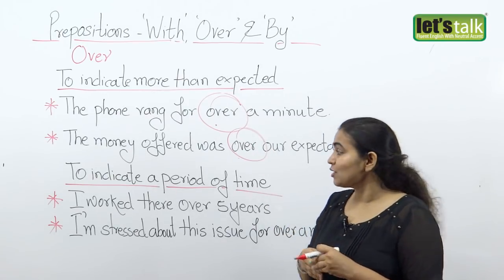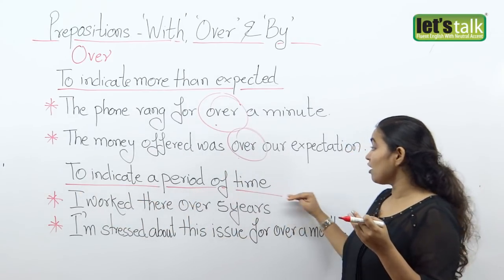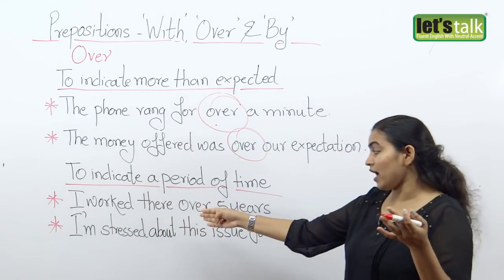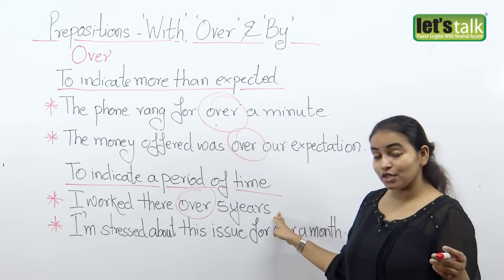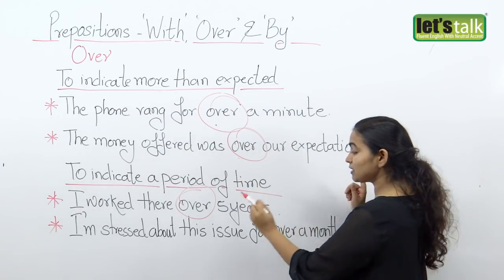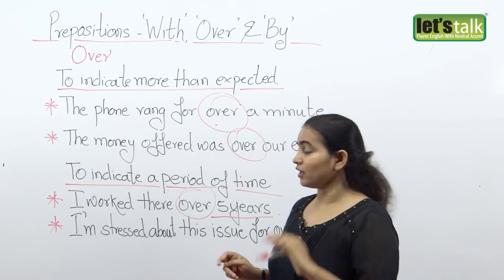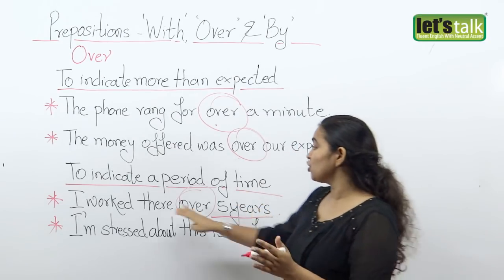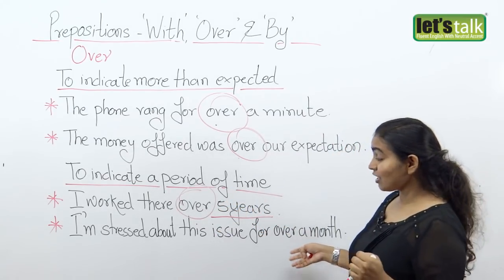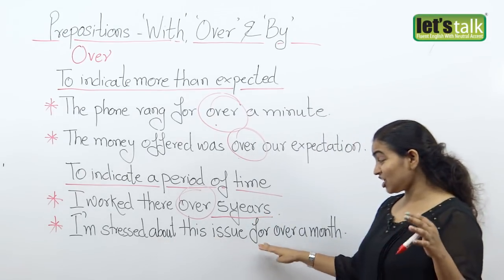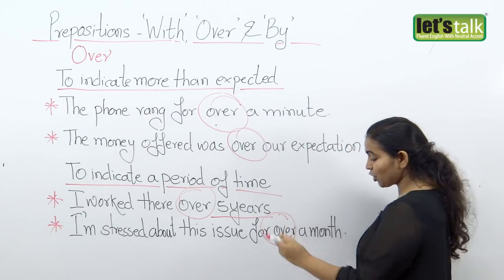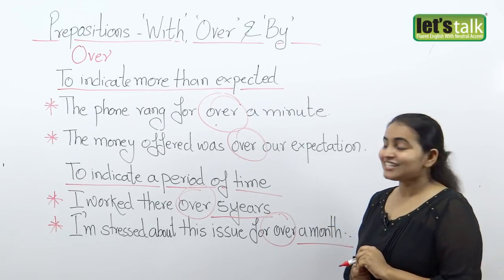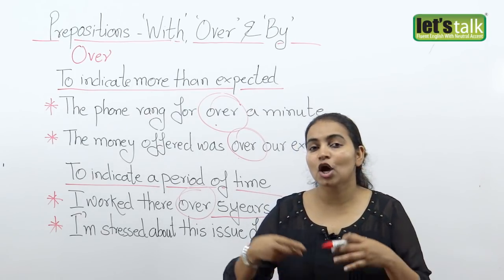We also use 'over' to indicate a period of time. For example: 'I worked there over five years' — the time period is very specific, indicating that I was with a company or organization for five years. And 'I'm stressed about this issue for over a month' — again using 'over' to indicate a specific time period, in this case a month.